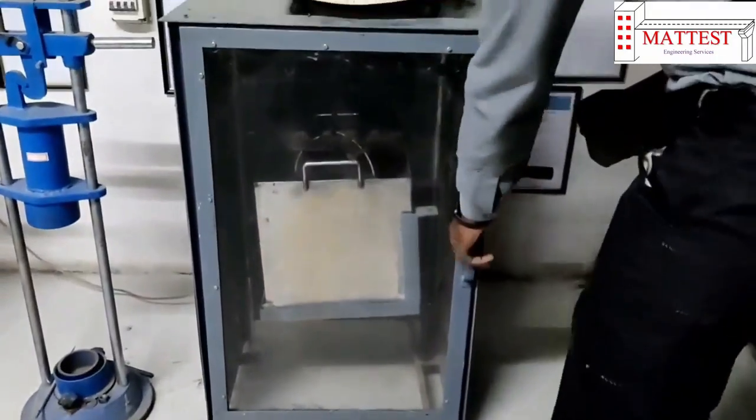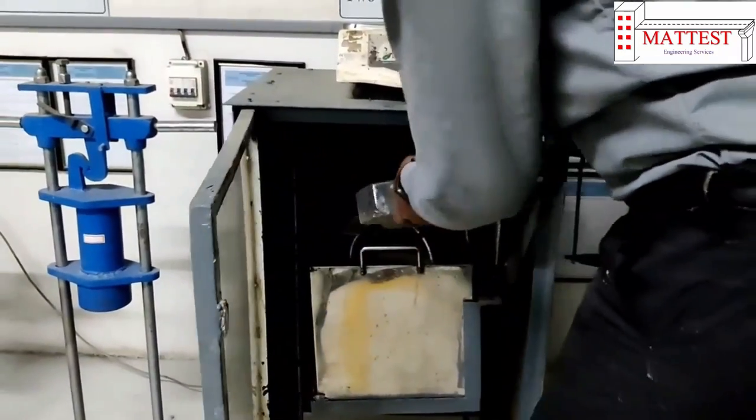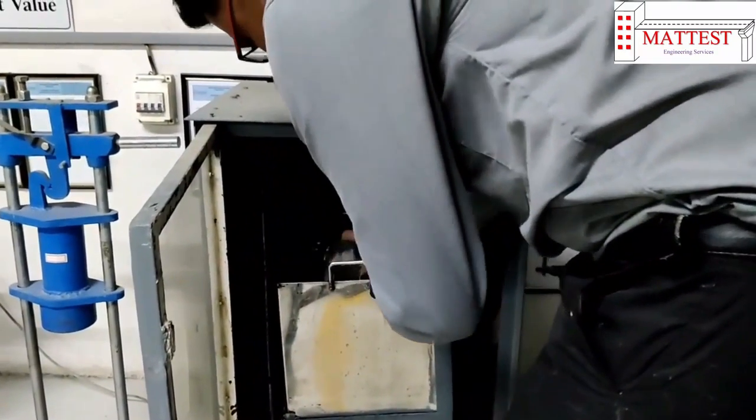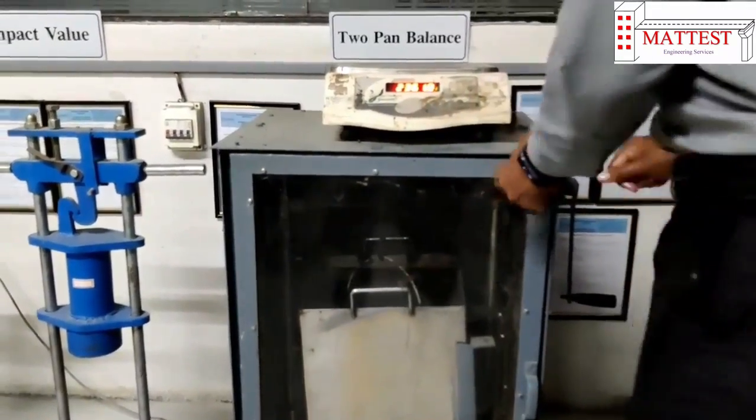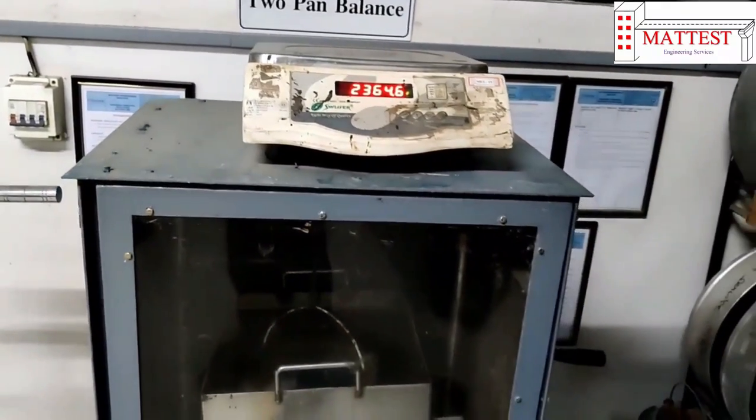Step 1: The test specimen is weighed while suspended by a metal wire and completely submerged in water. The weight shall be recorded in Newtons.